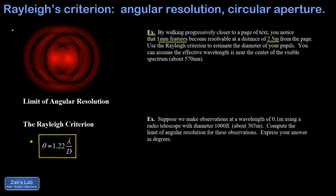Just as a rough approximation, one millimeter features become resolvable when you're standing two and a half meters from the page. I want to use the Rayleigh criterion to estimate the diameter of my pupils—that's the circular aperture. We're told that we can assume the effective wavelength of light is near the center of the visible spectrum, so about 570 nanometers.